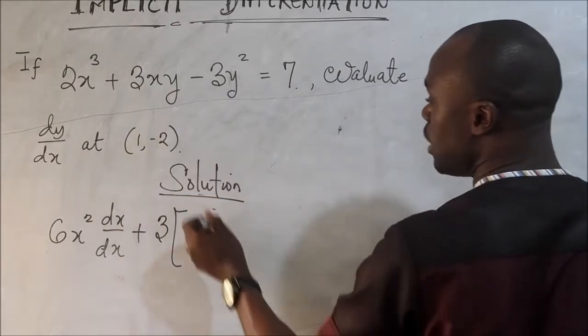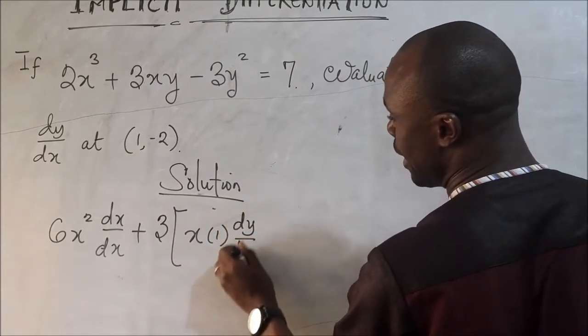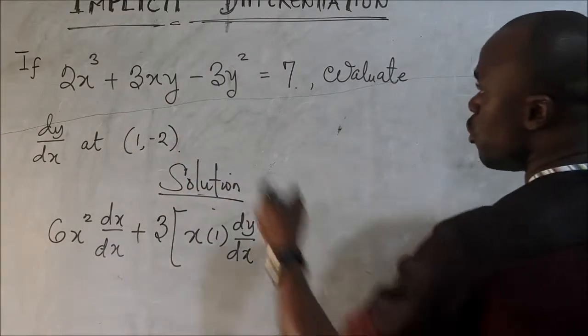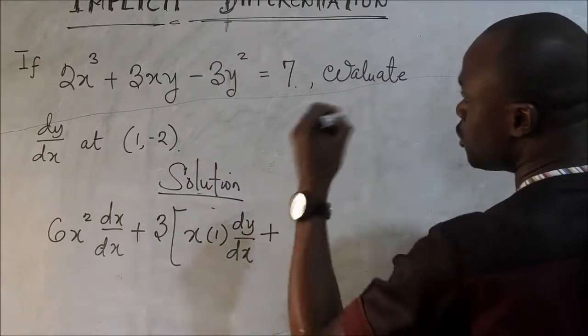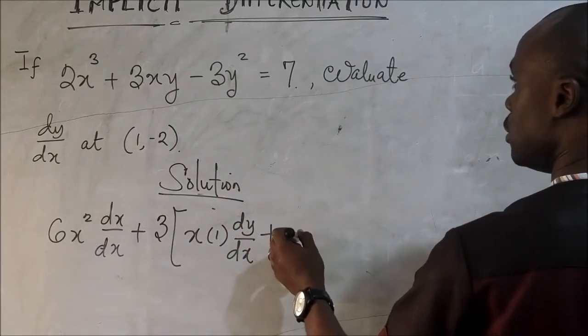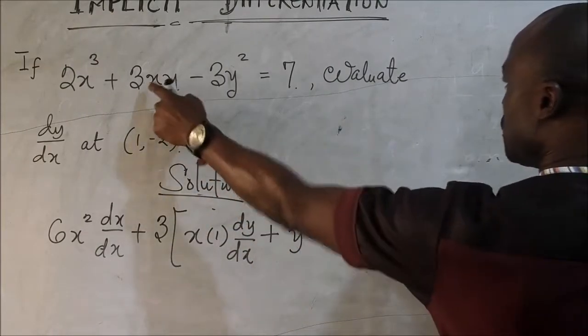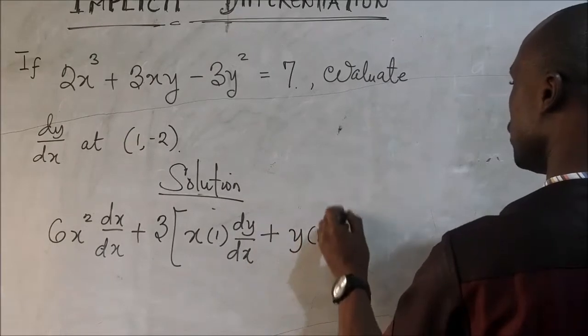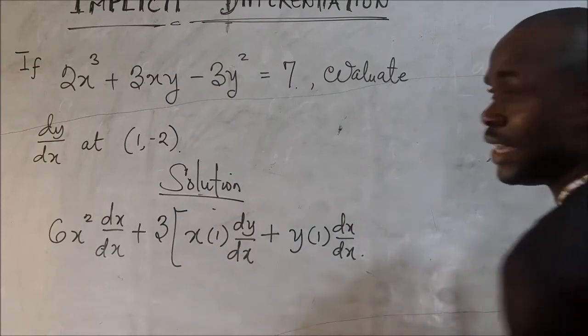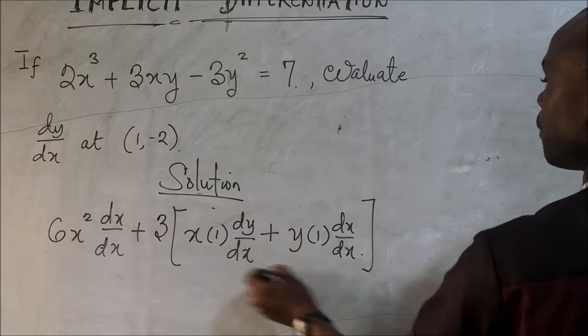We are going to treat that as a product rule. If we differentiate y, we are going to have 1 and we are going to write there dy dx because we differentiated the function of y. So on the other hand, we are going to have plus y being a constant. In this case, then we differentiate x. Then here we can have dx over dx. So this is for product rule. This is simply product rule. Take note, product rule.